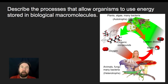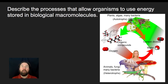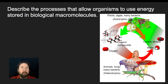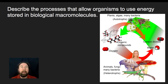Regardless of whether you are an autotroph or a heterotroph, whether you have the ability to build those carbohydrates or not, all organisms, once they have those carbohydrates, will break them down using forms of cellular respiration. Sometimes it is without oxygen — we call that anaerobic respiration — and sometimes it's with oxygen, called aerobic respiration. Some organisms have the capacity to do both, depending on the specific situation.